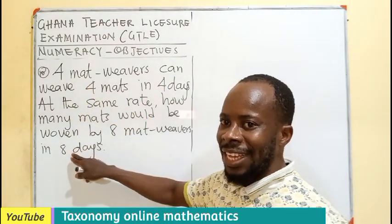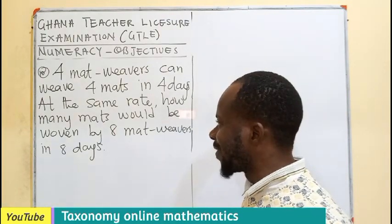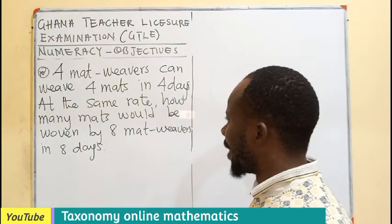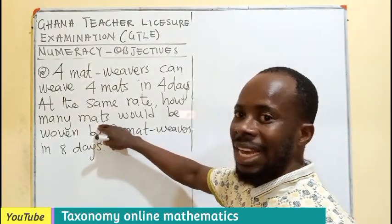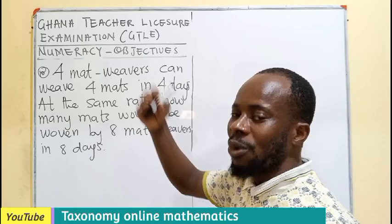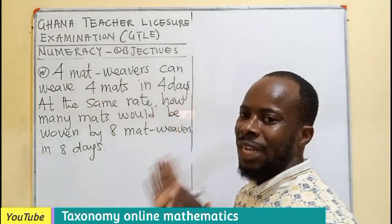So, eight, eight, eight. Your mind will be tricking you that the next answer, in how many mats, will be eight. Because eight, eight, eight, four, four, four. And that will be wrong.